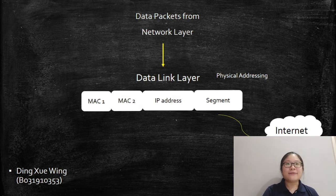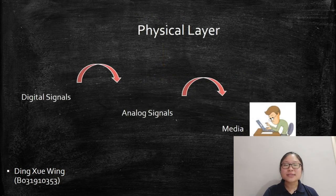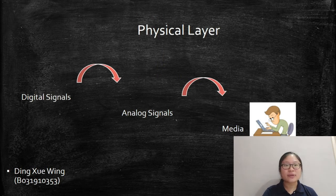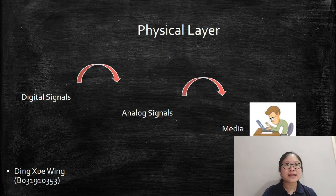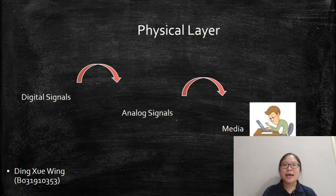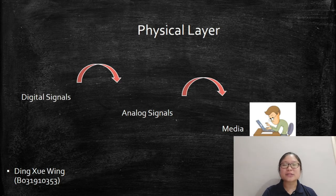Last, in the physical layer, it converts digital signals received from data link layer into analog signals and transmits them on physical media on lecturer's computer. While on the ULEARN system server, it picks analog signals from media and converts them into digital signals and transfers them to data link layer for further processing.